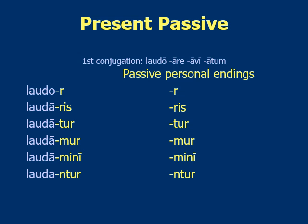For translation, you put a present form of 'to be' — so 'is praised,' 'am praised,' 'are praised.' Those are all present forms of 'to be': is, am, are. What makes it passive is the verb meaning is in the past participle form — loved, praised, advised, something like that.